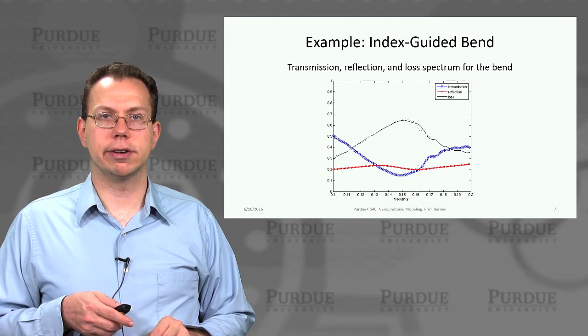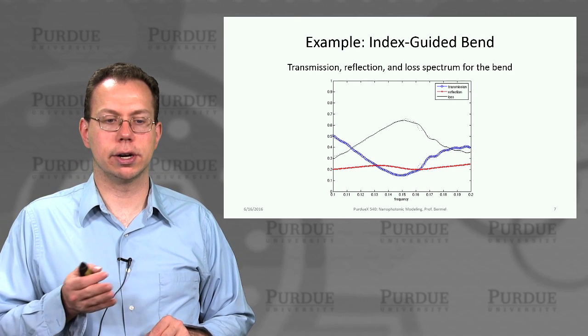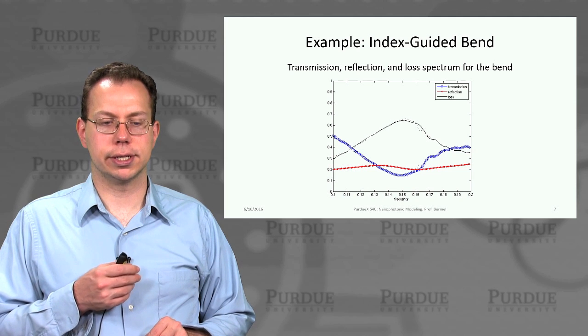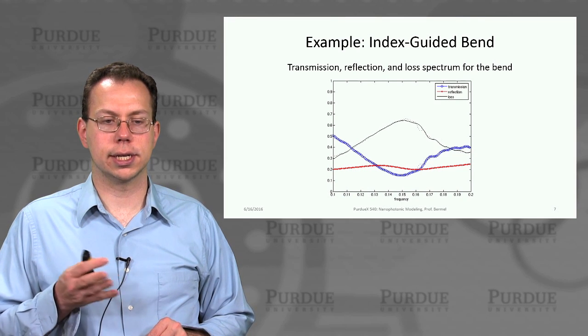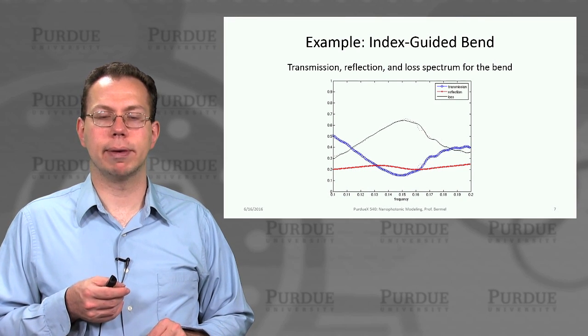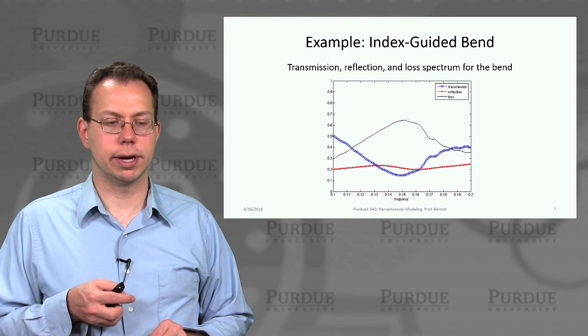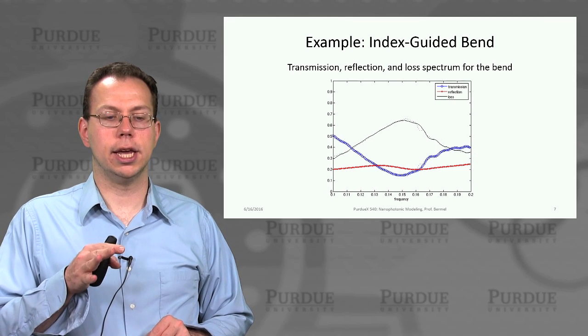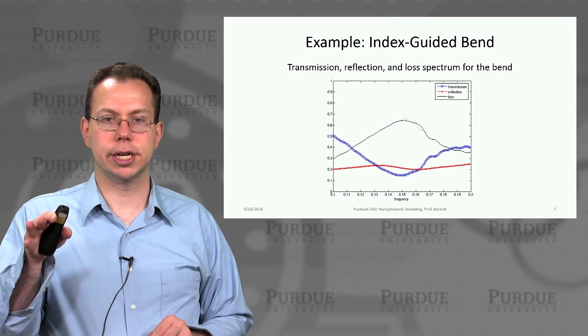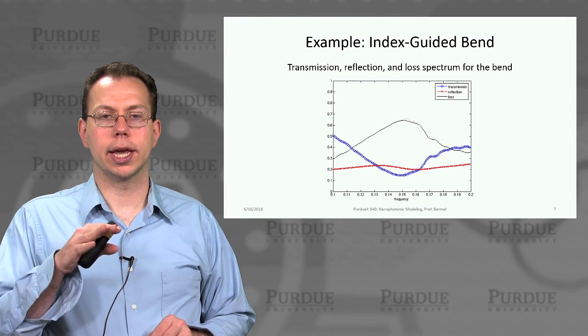But interestingly the reflection itself is not as strongly dependent on the frequency. So that tells us something about the bend that maybe we wouldn't have guessed right away. So basically the key trade-off is between radiation at that corner and transmission.